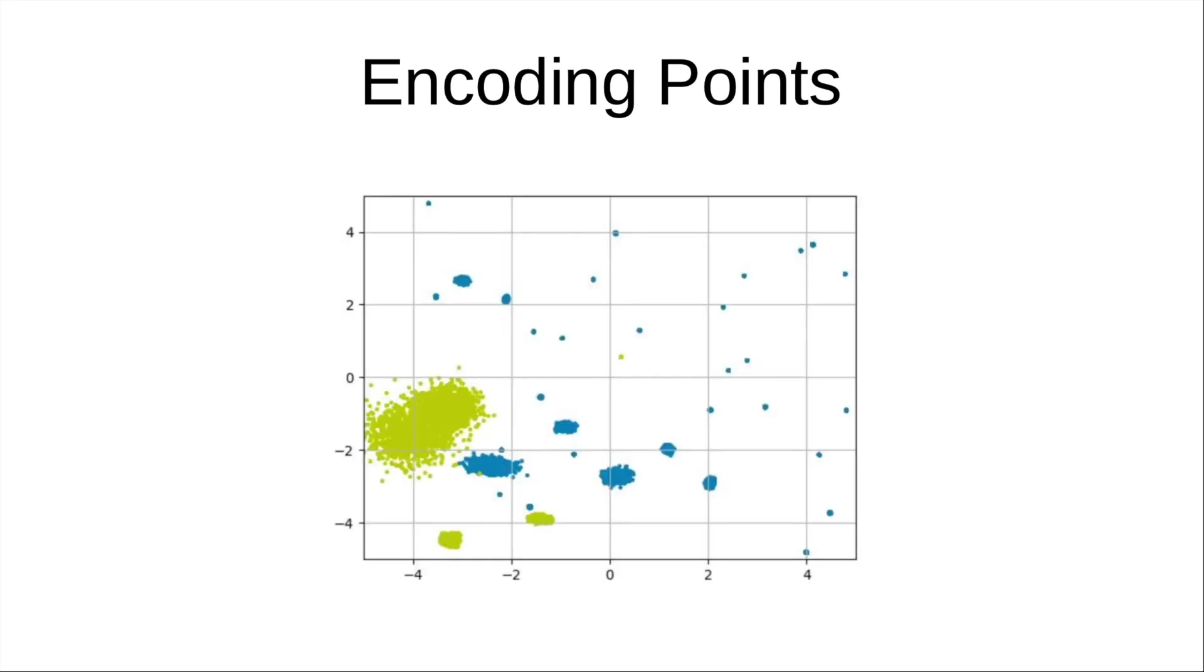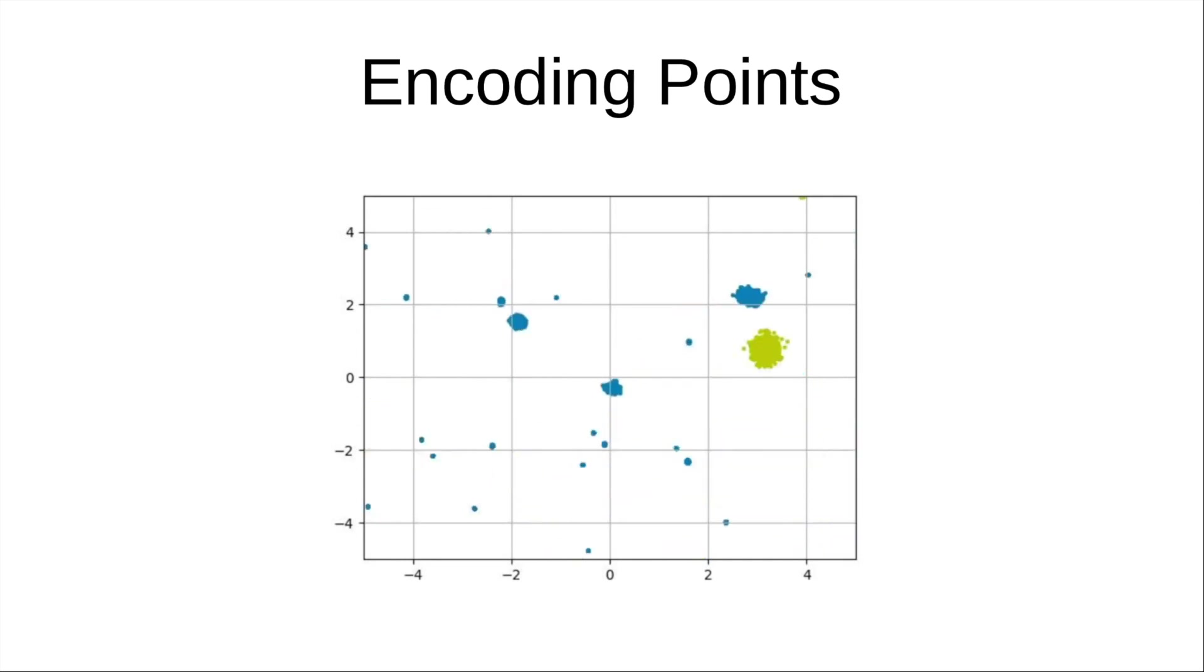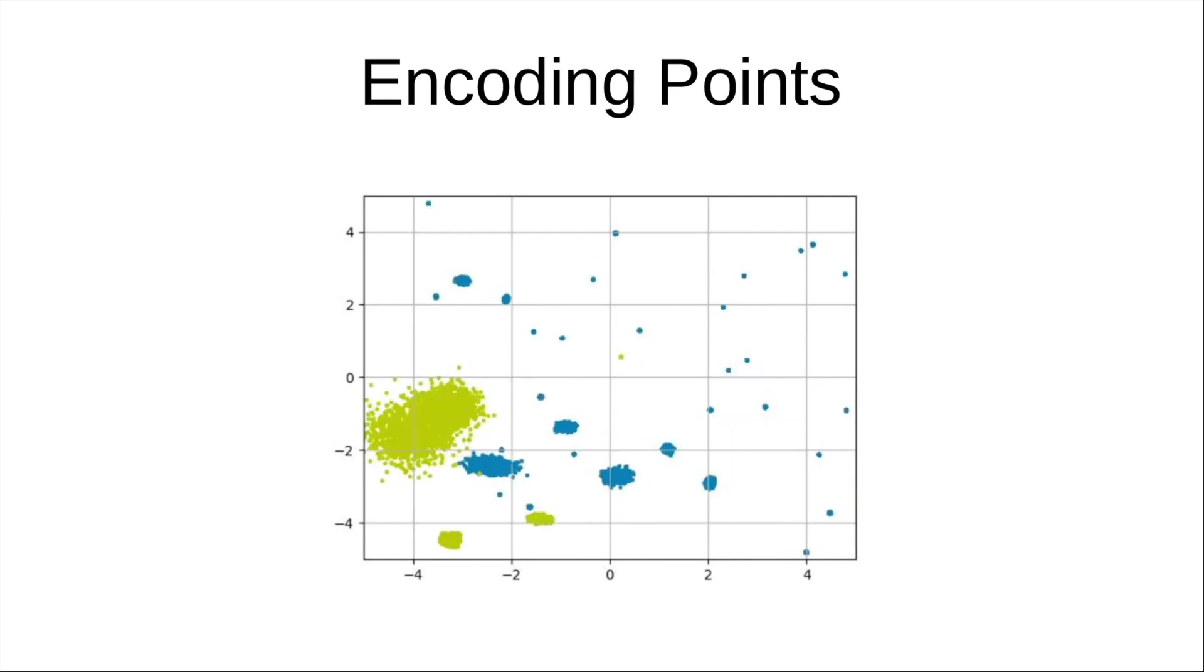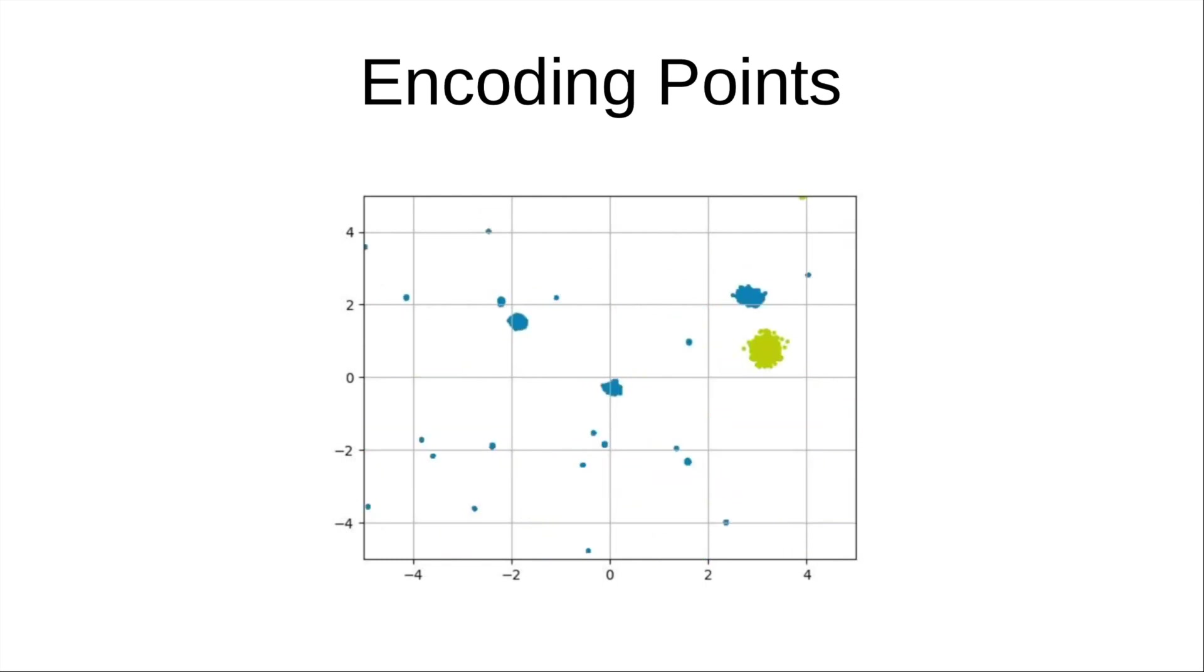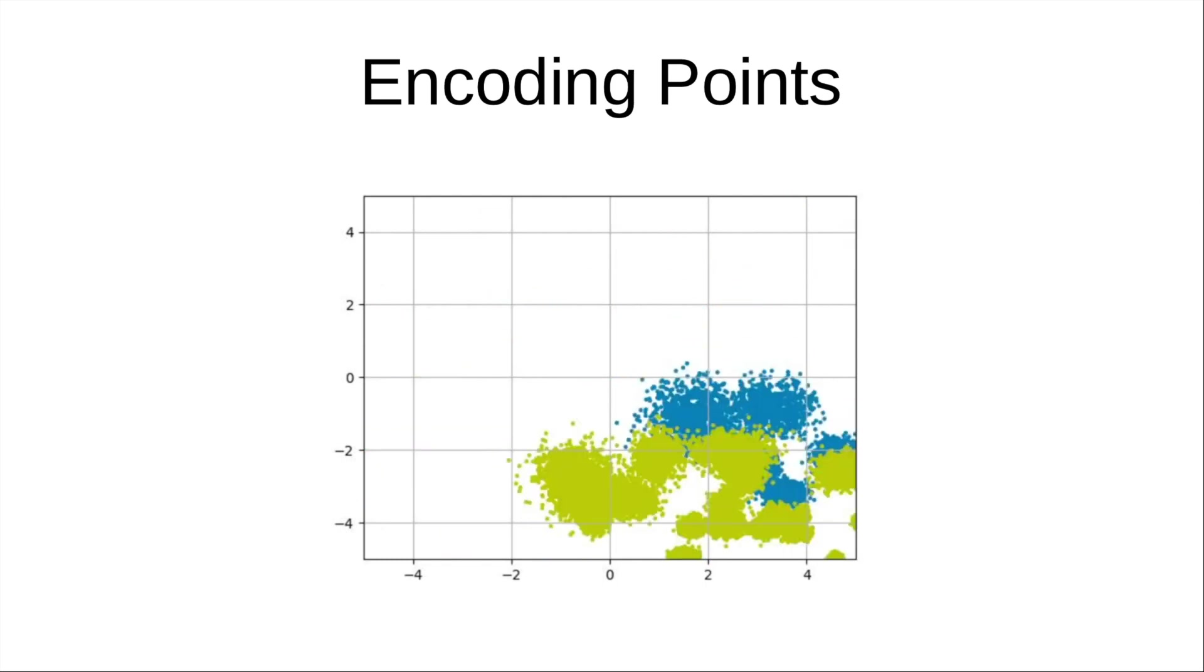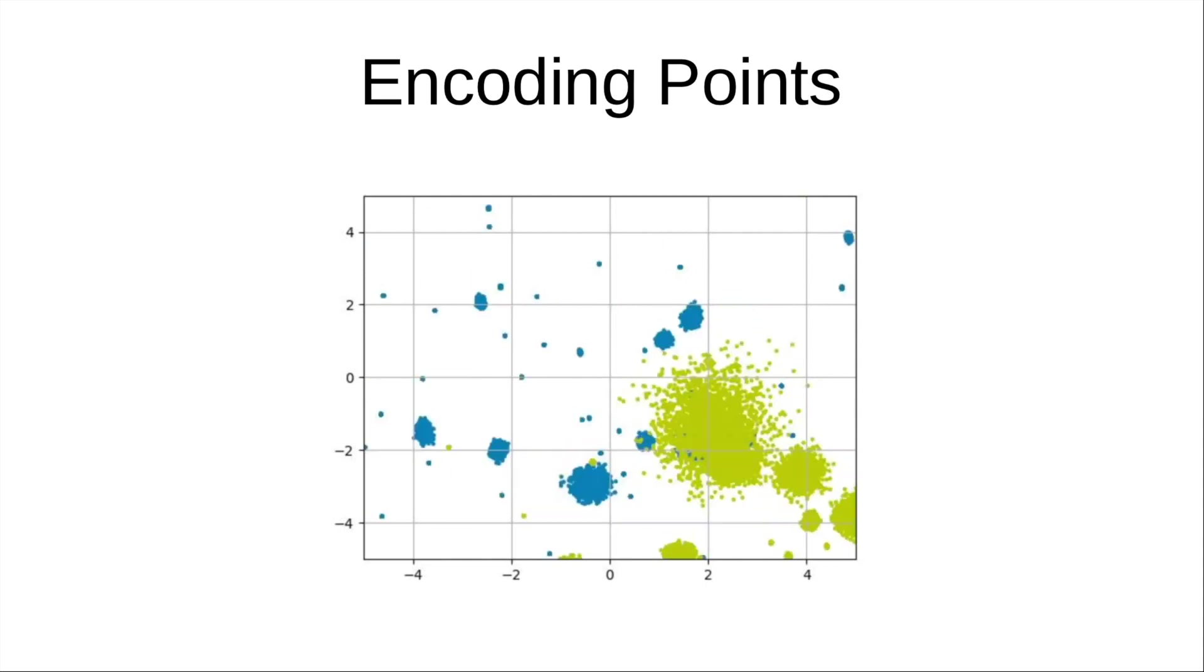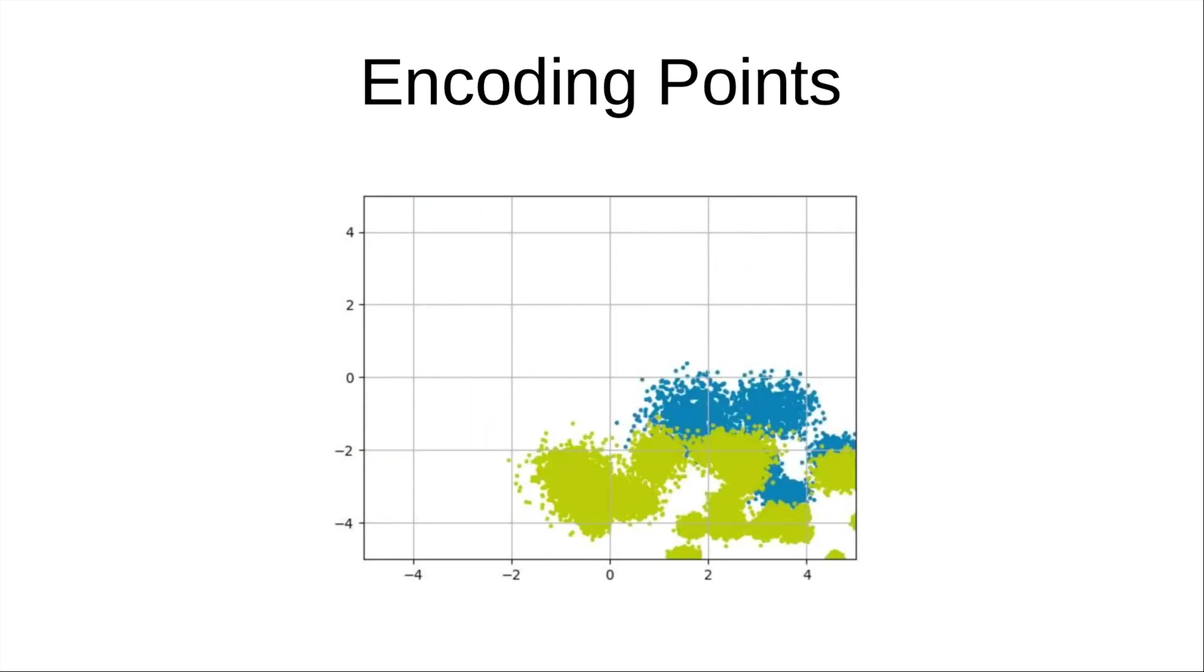However, when we actually make that change, things don't really go as we desire. Since there is no reason for the autoencoder to keep these distributions wide, it collapses them to a single point by predicting variances to a very small value, as that way it can do much better on the reconstruction loss, since for each encoded image, it would only have to learn to reconstruct that image from a single latent point rather than a wide distribution of points. And these are further pushed apart, leading us to the exact same state as before.